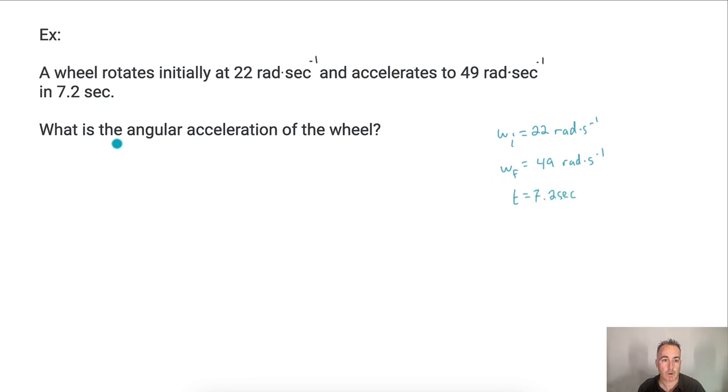All right, now what? We want the angular acceleration. What are we looking for here? This is important. What are we looking for here? This is alpha. So really then, this is the key thing here. We want alpha. And we have omega i, omega f, and t. So we're looking for an equation that has alpha, omega i, omega f, and t perhaps.